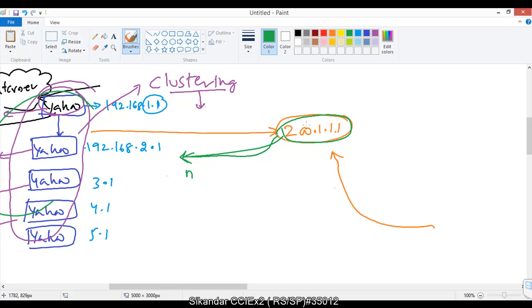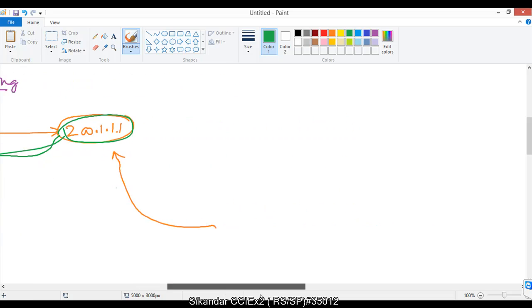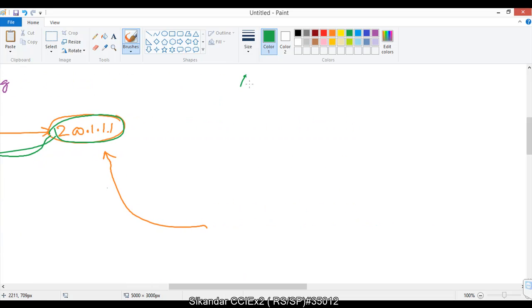To implement this type of thing, we have something called anycast address which was introduced. What is the advantage we get here in IPv6 when we compare with IPv4?